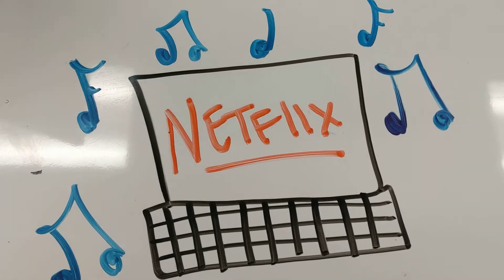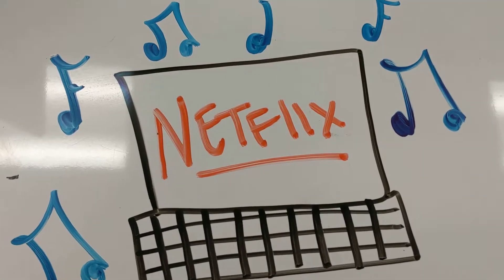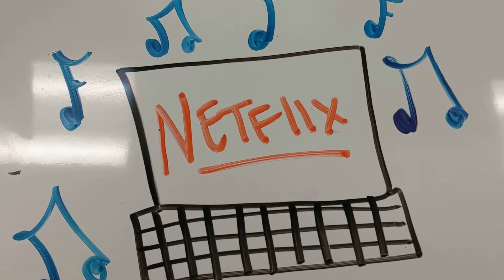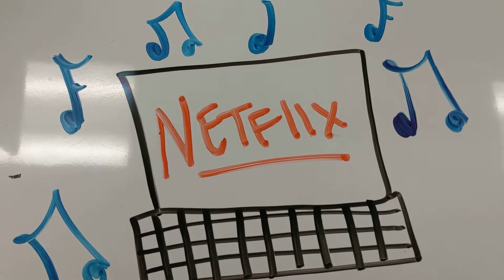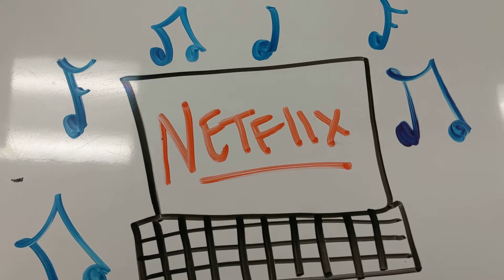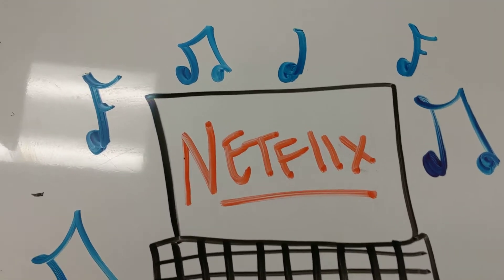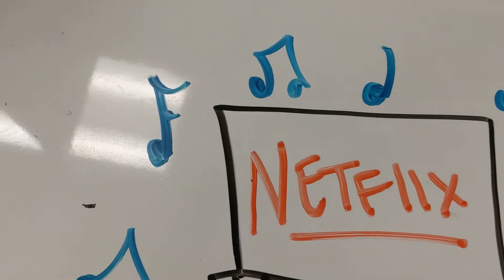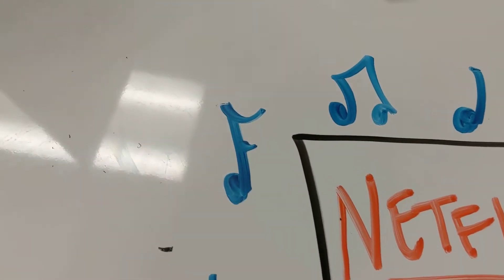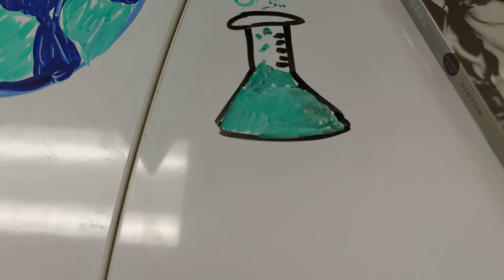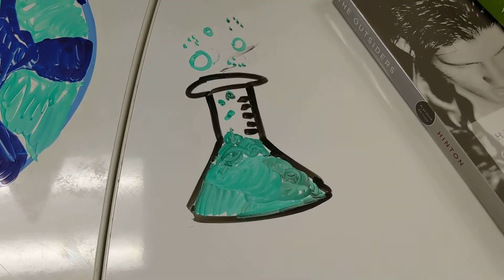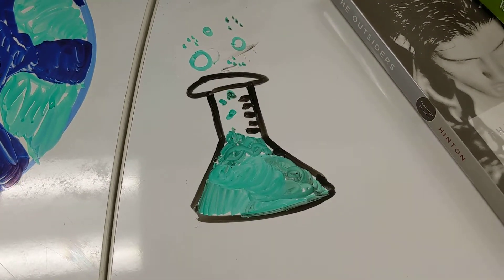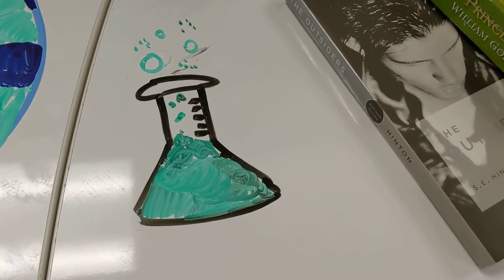Our seventh grade students begin to watch Riverdale and assess which character has become the threshold guardian. They listen to Billie Eilish's 'Bury a Friend' and analyze the deeper meaning behind the lyrics. They sit in science class looking at cures and causes of diseases and are able to pinpoint the shadow of each scientist that tested their resolve.